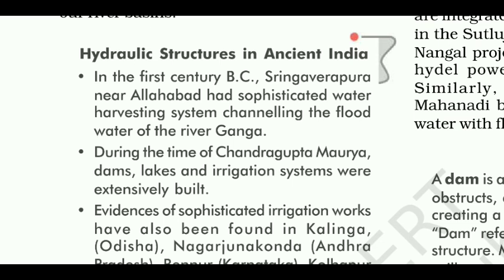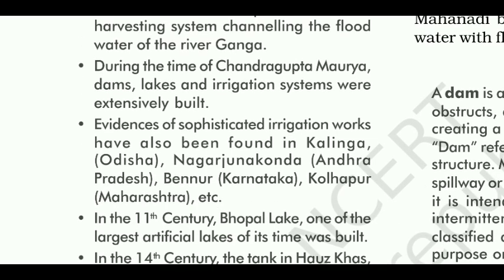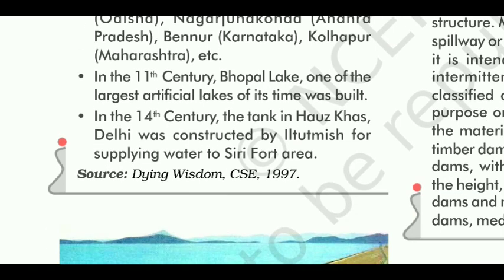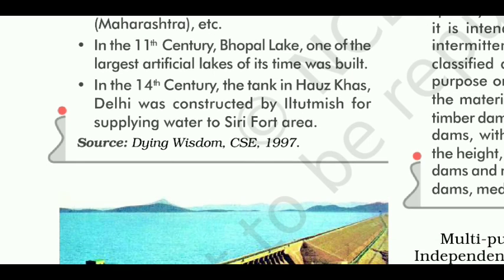Hydraulic structures in ancient India: In the 1st century BC, Sringaverapura near Allahabad had a sophisticated water harvesting system channeling the floodwater of the river Ganga. During the time of Chandragupta Maurya, dams, lakes, and irrigation systems were extensively built. Evidence of sophisticated irrigation works has also been found in Kalinga (Odisha), Nagarjuna Konda (Andhra Pradesh), Bennoor (Karnataka), and Kolhapur (Maharashtra). In the 11th century, Bhopal Lake, one of the largest artificial lakes of its time, was built. In the 14th century, the tank in Hauz Khas, Delhi was constructed by Iltutmish for supplying water to the Siri Fort area.